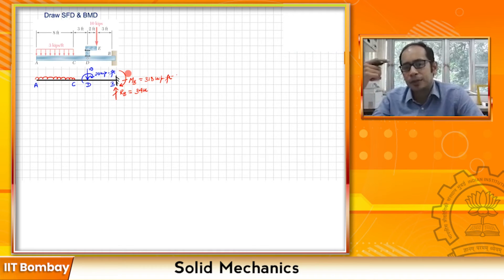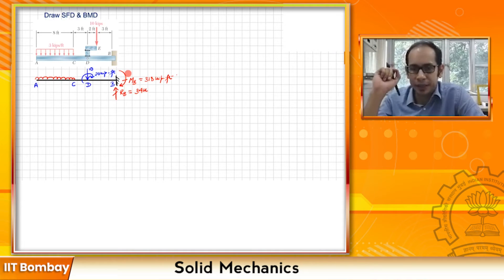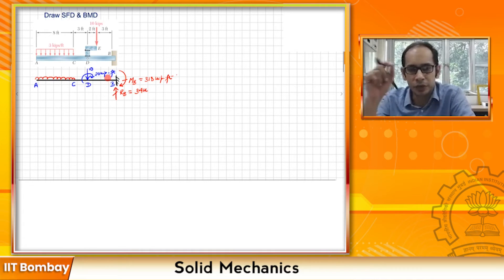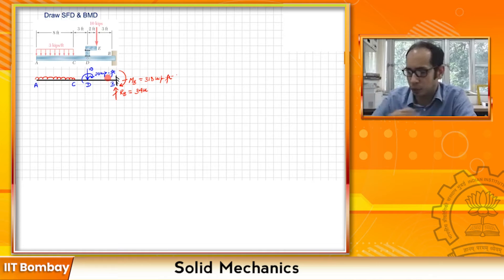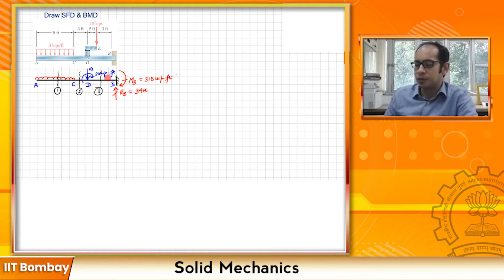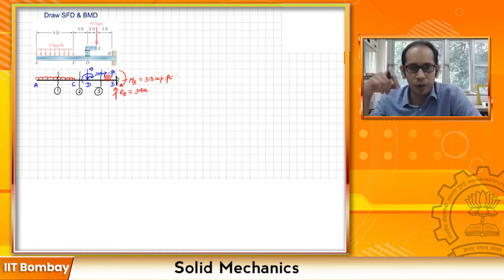We need to identify the different sections for the diagrams. Looking at the figure, we need a section where the uniformly distributed load is acting, then between C and D after the UDL ends, and then from D to B. So we take section 1 in the first region, section 2 between C and D, and section 3 between D and B.